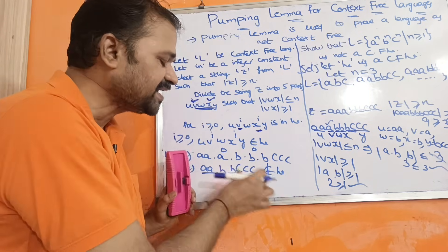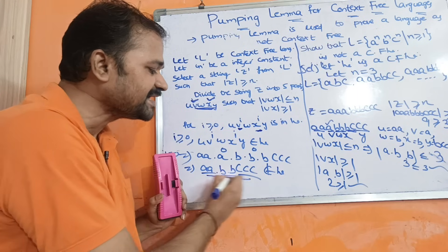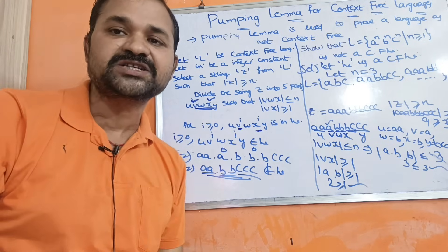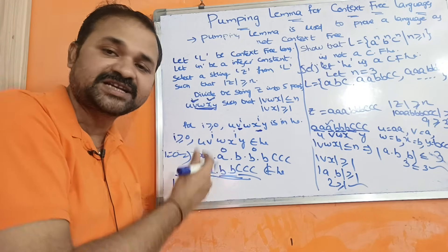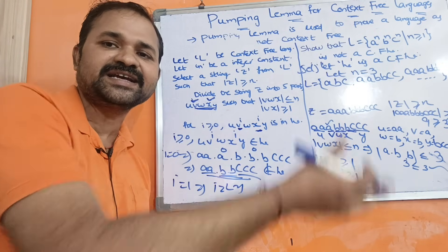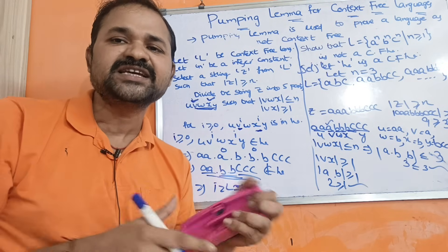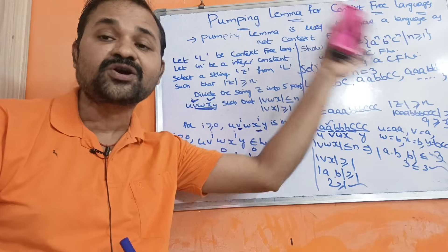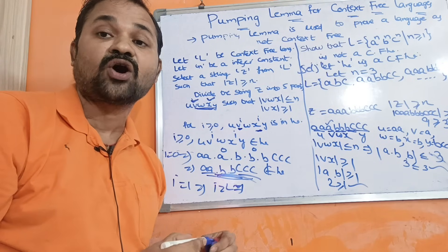Here we got a contradiction. Initially we assumed L is a context-free language, but we found a string that is not present in the language. So we can say that our language is not context-free. If the string were present in the language, we would try i = 1, i = 2, and so on, generating strings until we find one not in the language. Since we found such a string, we conclude this language is not context-free.